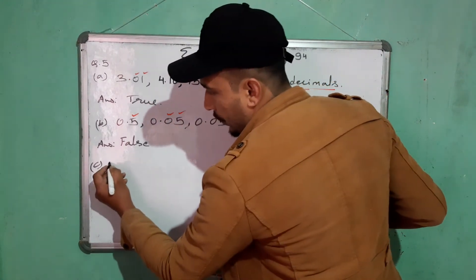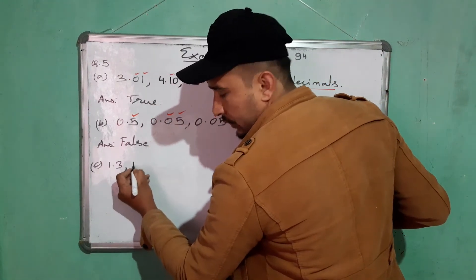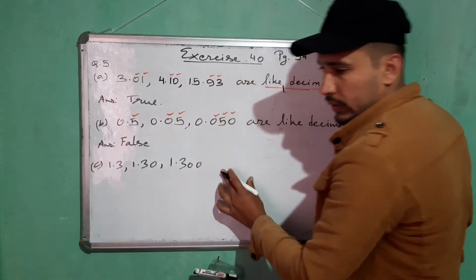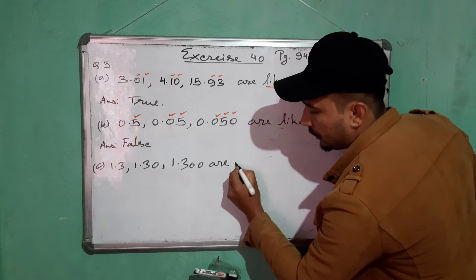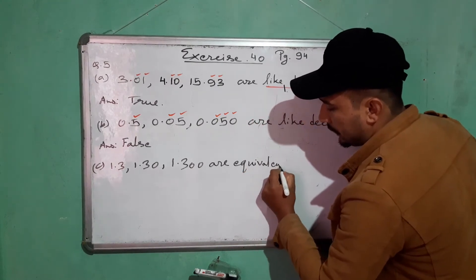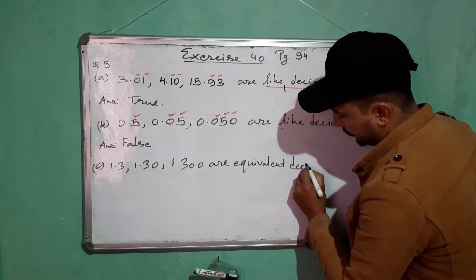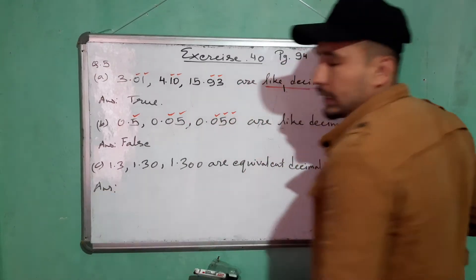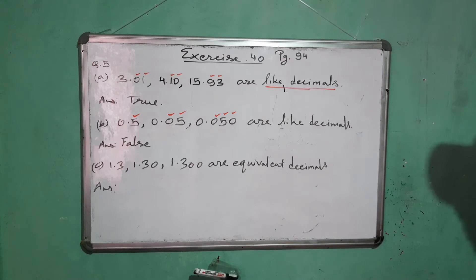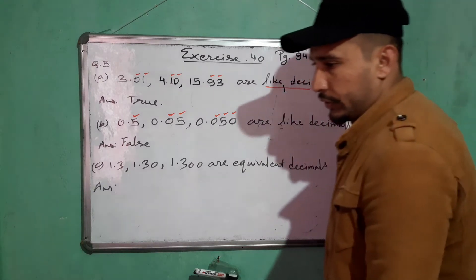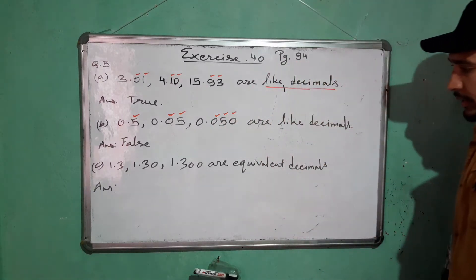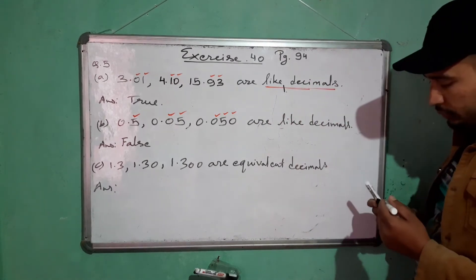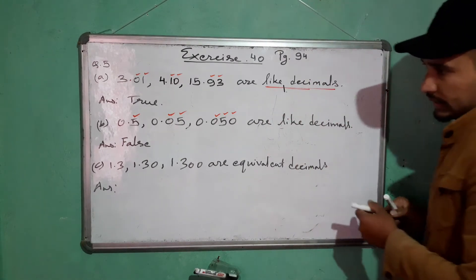Number (c): 1.3, 1.30, and 1.300 — are these equivalent decimals? I have already explained the meaning of equivalent decimal in a previous video, but I'll explain again. Equivalent decimals means decimal numbers having the same numerical value.